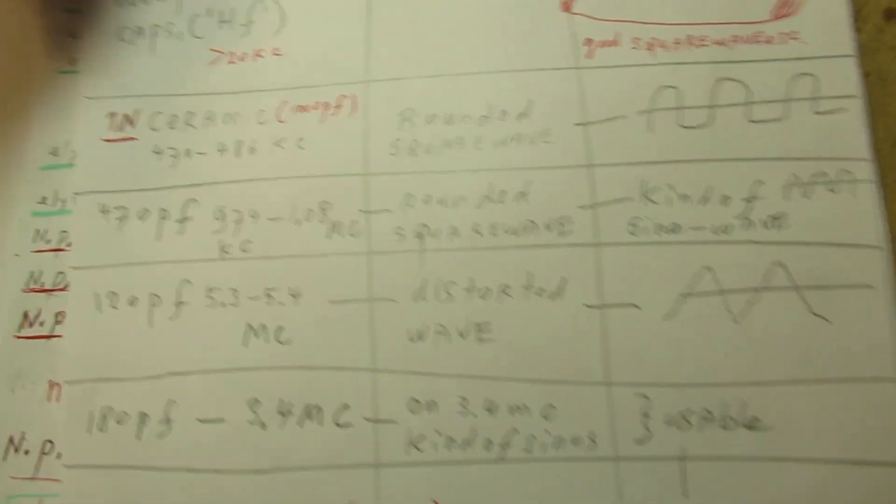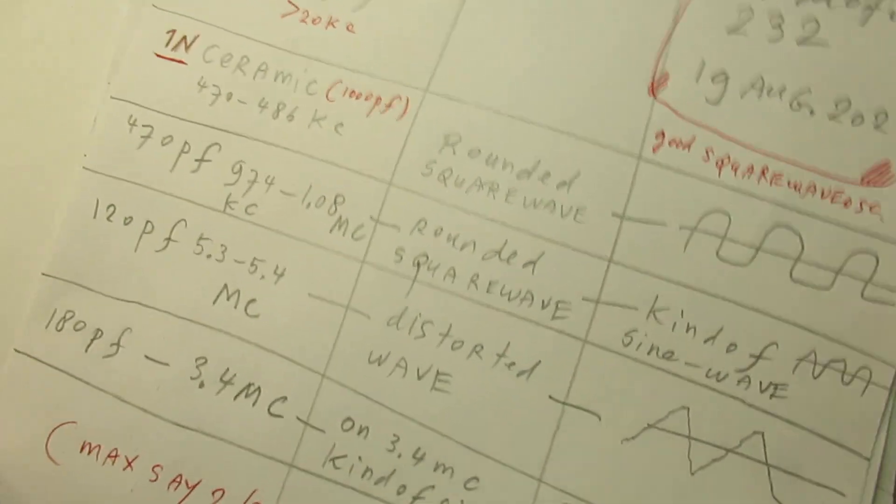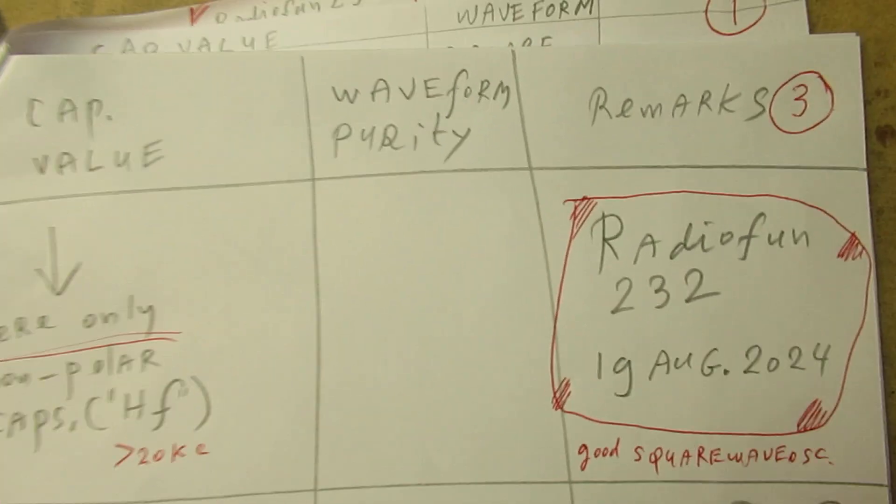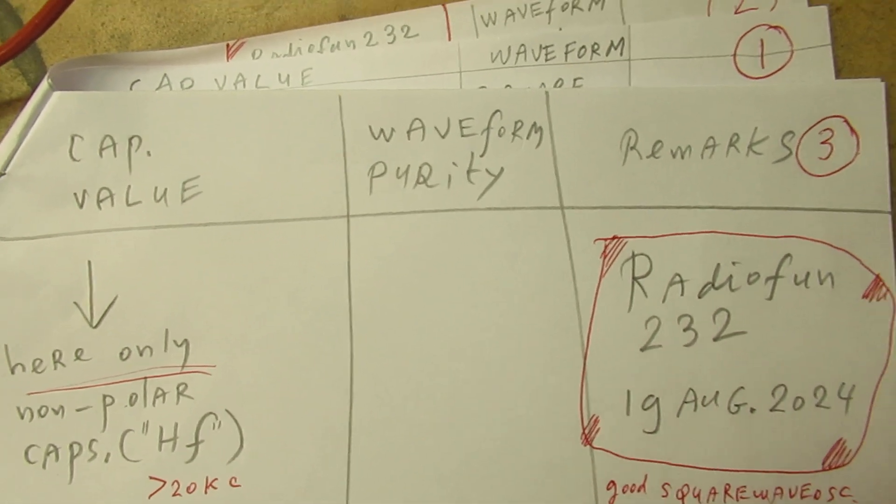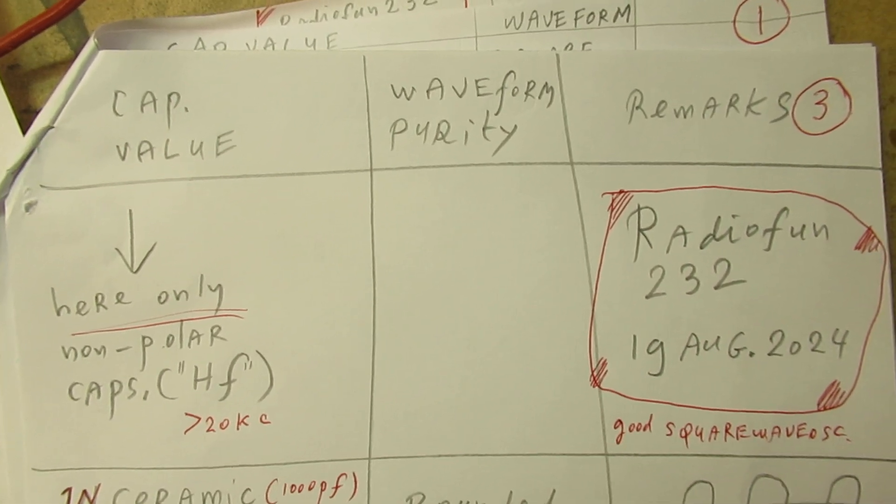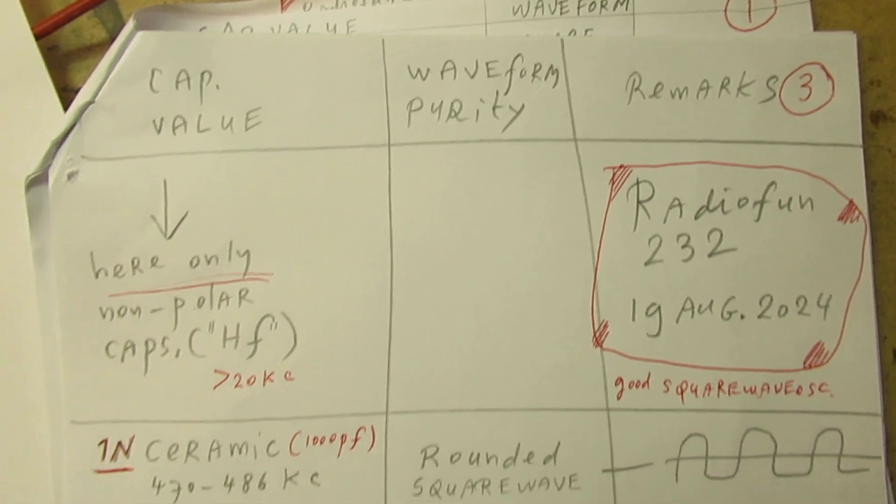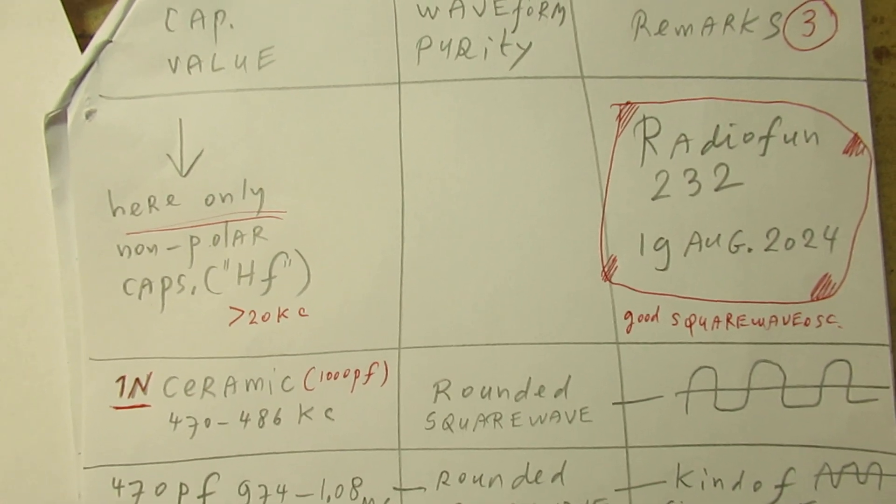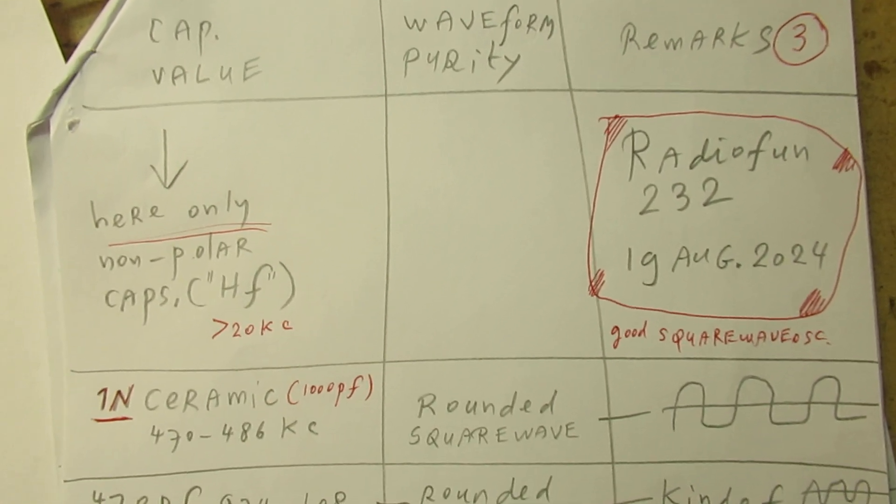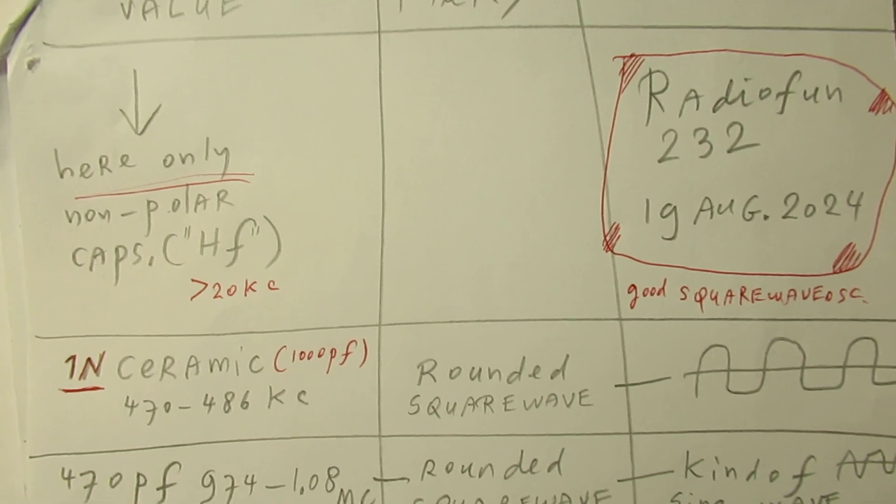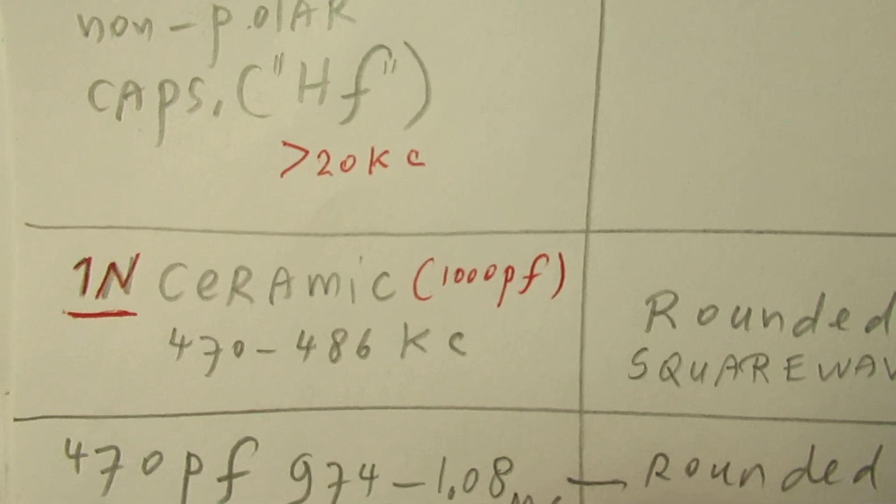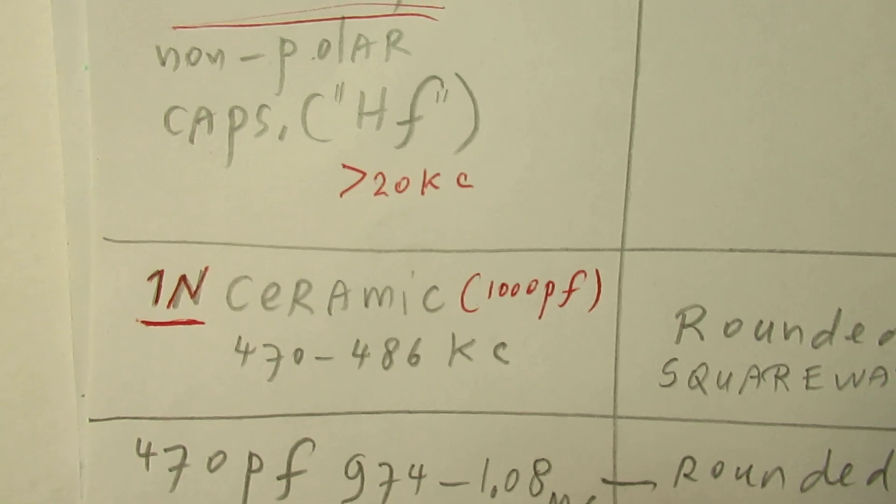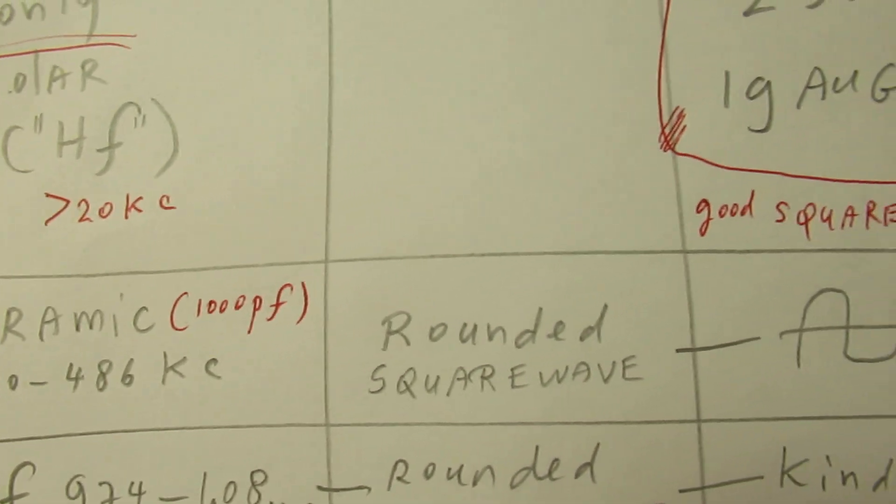In a certain way logical. Perhaps when you use other transistors, not the simple BC547B but high frequency transistors, perhaps you can get somewhat sharper waveforms. Ceramic capacitor 1 nanofarad gives somewhat rounded waveform in this frequency band.